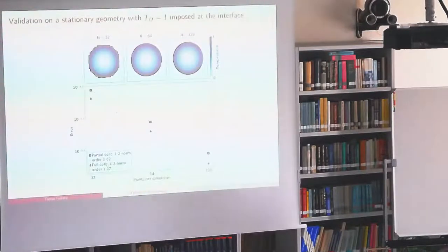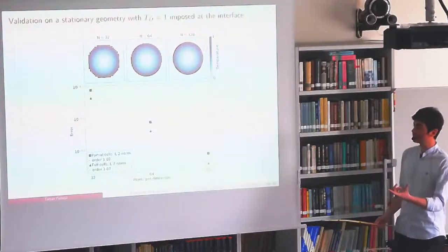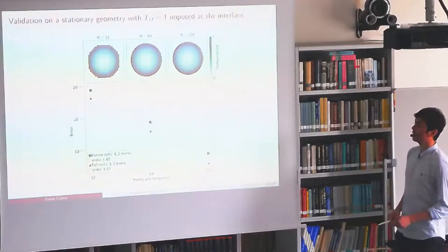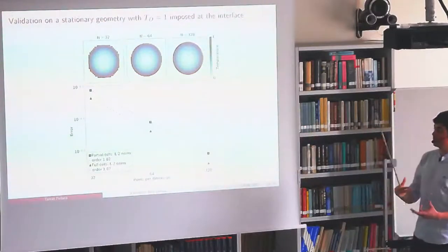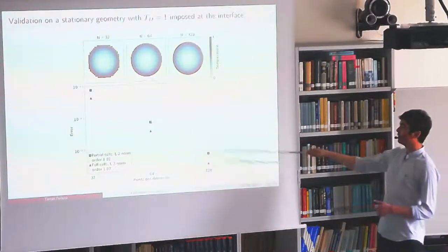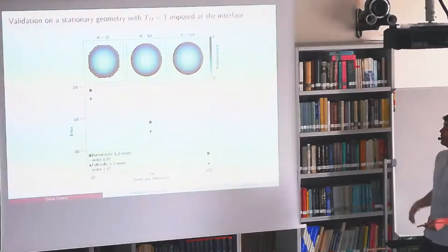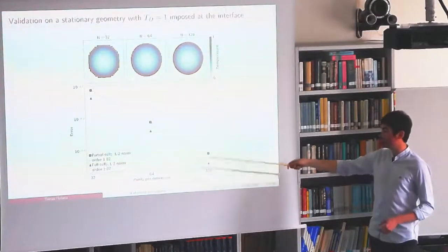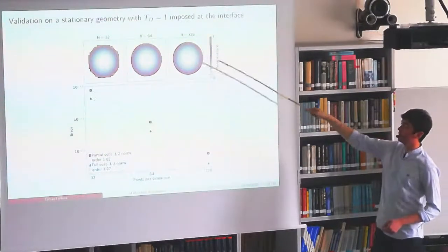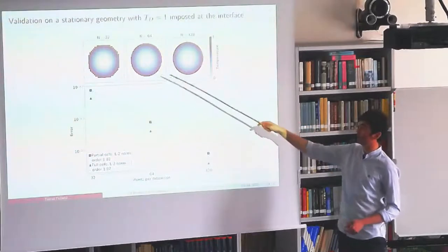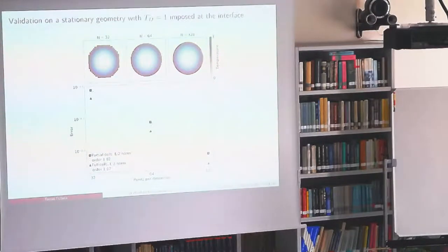We test this on a simple stationary geometry: a circle inside a square, imposing a Dirichlet boundary condition equal to one at the interface, solving only inside. Using N=256 as a reference solution, we observe convergence with quasi-order two. The temperature field is shown for different values of N, with the interface in red and the color map showing temperature.